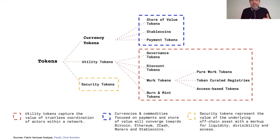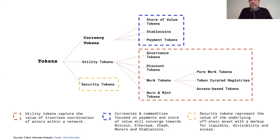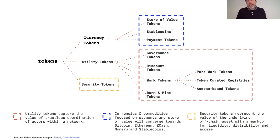We can go a bit deeper and look at subcategories. Currency tokens can be a store of value — the famous example being Bitcoin — or stablecoins like DAI, Tether, USDC, and Facebook's Libra, or simple payment tokens like Ripple. Utility token subcategories include governance tokens — if you're into DeFi and yield farming you know what I'm talking about — as well as discount tokens, work tokens, and even more subcategories.